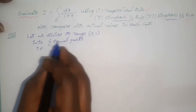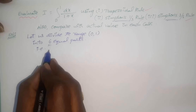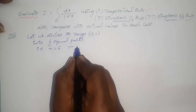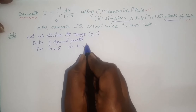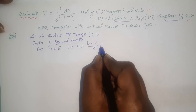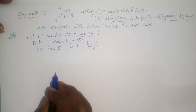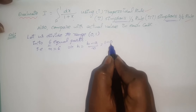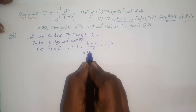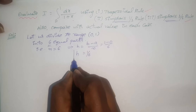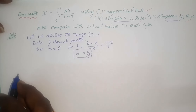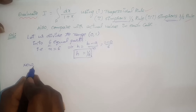The number of equal parts, or sub-intervals, is represented by n. From this, find the value of h, which is b minus a by n, equal to 1 minus 0 by 6, so h equals 1 by 6. Now we consider the following data.